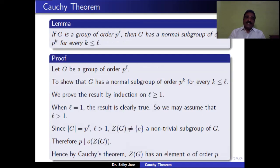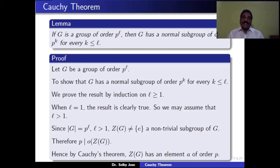One consequence of Cauchy's theorem: if G is a P-group, meaning G has order P^L, then G always has a normal subgroup of order P^K for each K ≤ L. This means G has a normal subgroup of order P^0, P^1, P^2, and so on up to P^L.